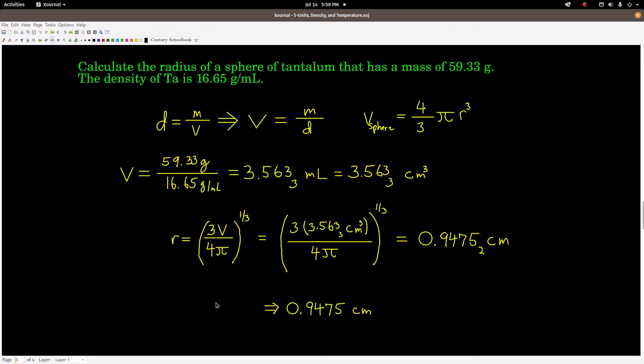Here's a little example to illustrate the use of density. We're asked to calculate the radius of a sphere of tantalum that has a mass of 59.33 grams, and we're given the density of tantalum, 16.65 grams per milliliter. The idea is if we can get the volume of that sphere, then we can use the formula for the volume of a sphere and solve for r, the radius, which is what we want.